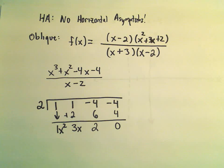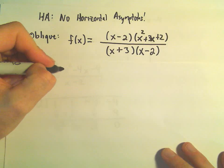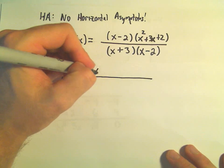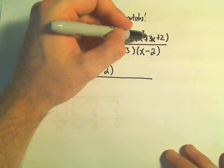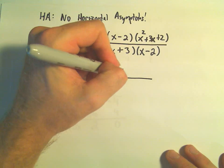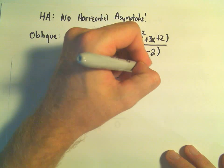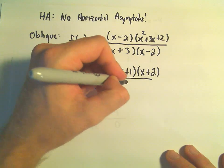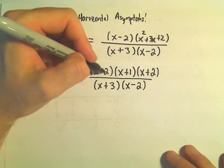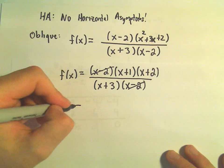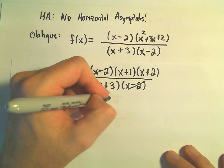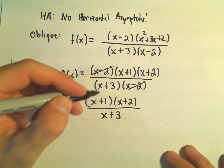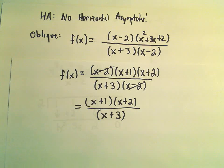I'll factor x squared plus 3x plus 2 further as x plus 1 times x plus 2. The denominator has x plus 3 and x minus 2. Canceling the x minus 2 factors, we're left with x plus 1 times x plus 2 over x plus 3, and I don't think we can reduce this further.